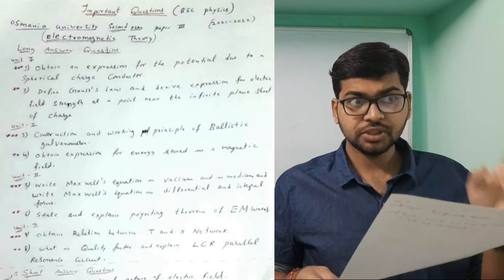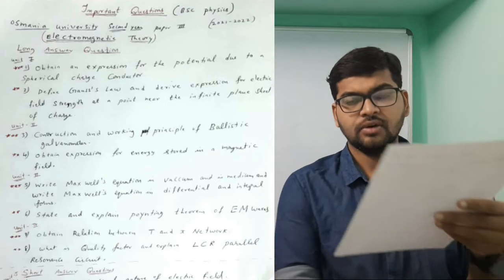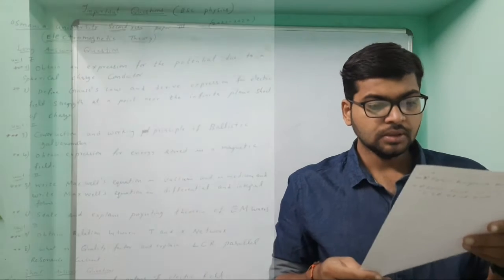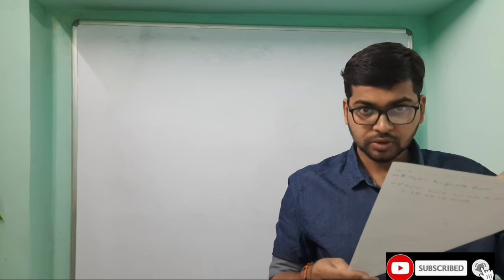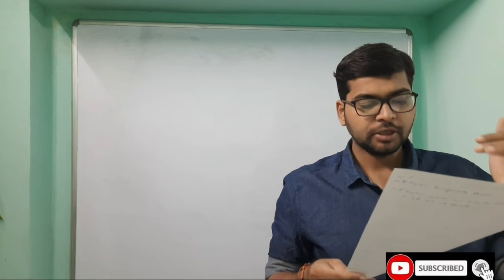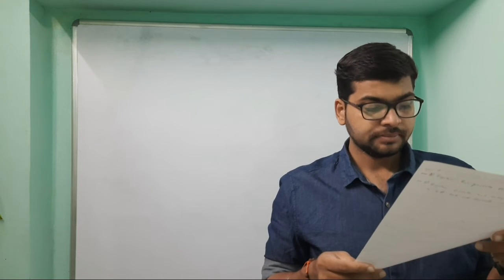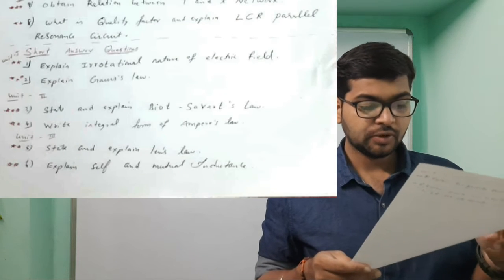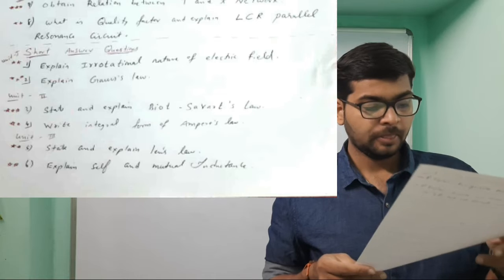And short answer questions you write five out of eight. Now coming to short answer questions: first unit, explain irrotational nature of electric field.